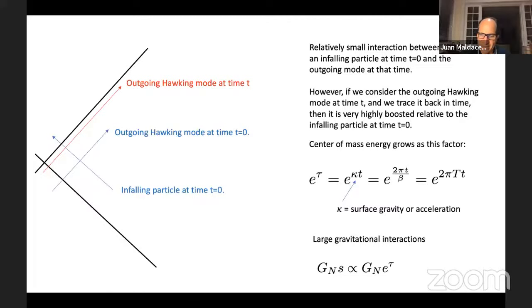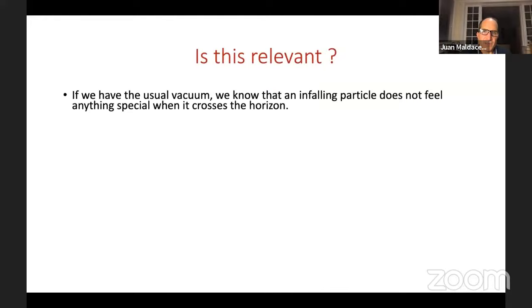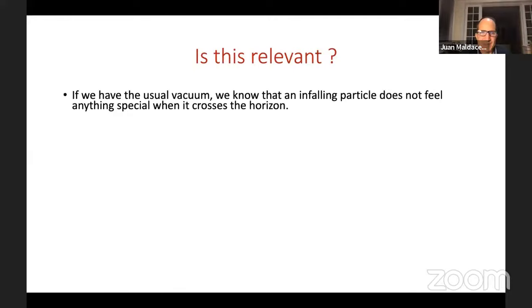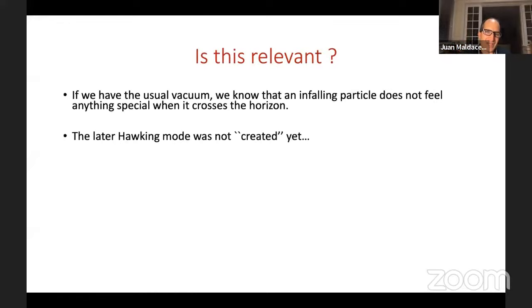This was pointed out by Dray and 't Hooft. However, if we have the usual vacuum, the infalling particle does not feel anything special when crossing the horizon — the later Hawking mode has not been created yet. Better said: we have a series of Hawking modes in the vacuum, and the vacuum is invariant under time translations. When we scatter these modes, the net effect is a certain time delay. Since the state is symmetric under time translations, we will not see any local changes — it doesn't look observable.